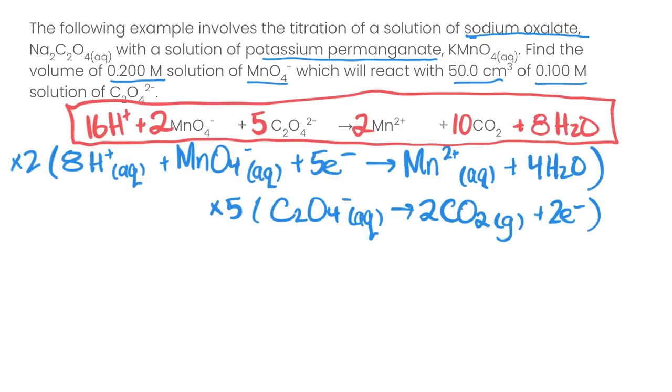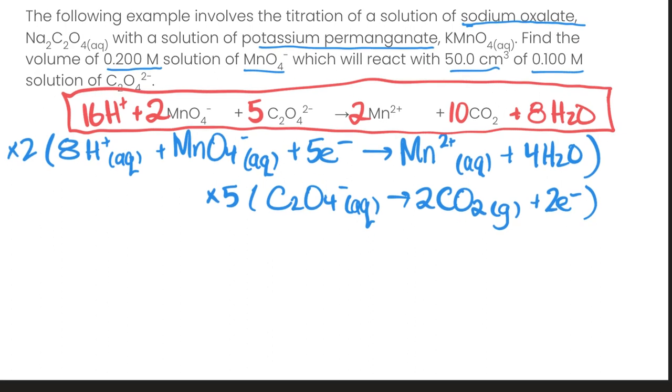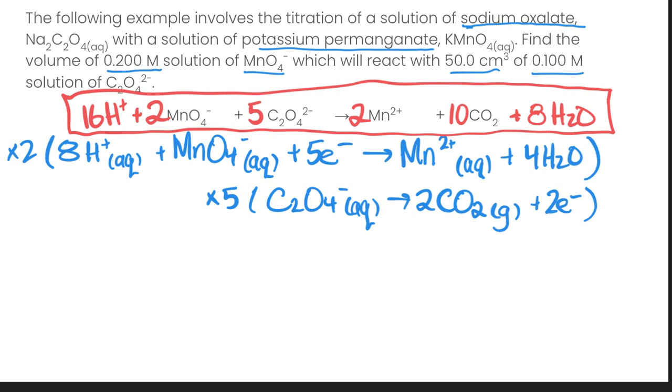Okay, welcome back. So you should have the following two half reactions here, one containing the MnO4-, and the other one containing the oxalate ion, and your final balanced equation should be here. So make sure you take a minute and check your answer before moving on.